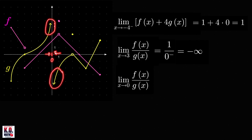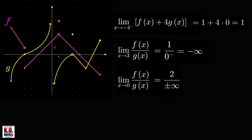Therefore, the limit of this quotient is equal to 2 over plus or minus infinity. And if we're going to divide 2 by a large positive number or by a large negative number, then we get a small positive or negative number, and that number approaches 0. Therefore, the limit of this quotient here is equal to 0.